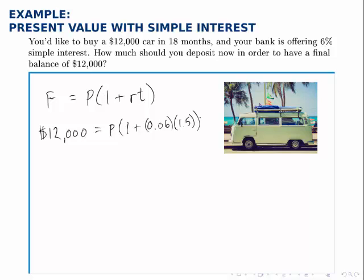So we filled in the formula with everything that we know, and all we have to do is solve for P. So what I'm going to do is I'm going to simplify everything in parentheses here on the right, and then divide both sides by that quantity to solve for P, to get P by itself. So we have 12,000 equals P times 1.09.